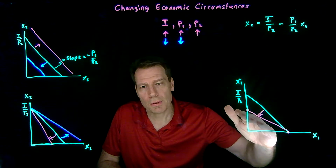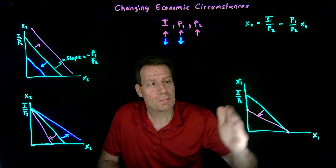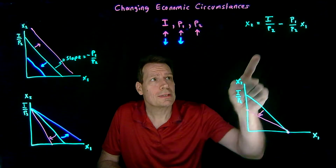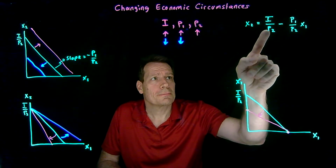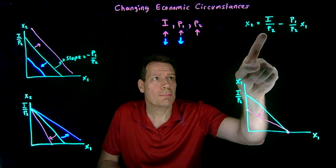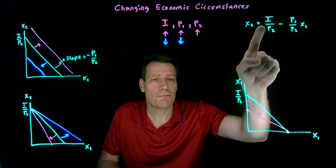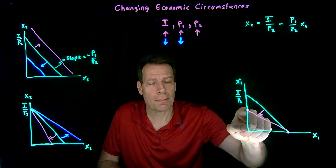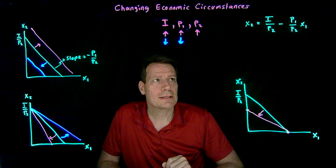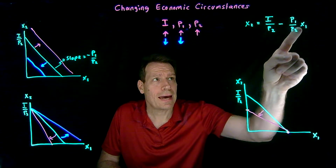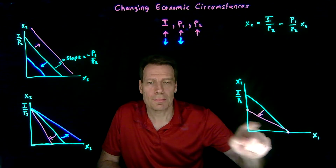We can see intuitively what should happen: that point on the horizontal axis remains the same, but the intercept falls and the slope changes. Does that comply with what the equation says? Yes — p2 appears in the intercept's denominator, so if p2 increases, this number falls, giving us the drop in the intercept. And if p2 increases in the slope term, that number falls in absolute value, giving us a shallower slope. That's exactly what the picture shows.